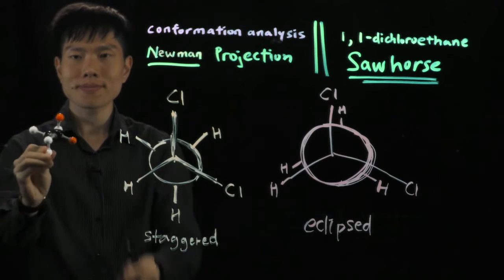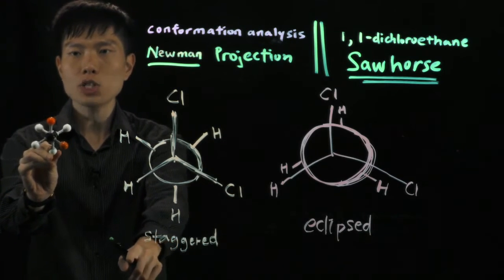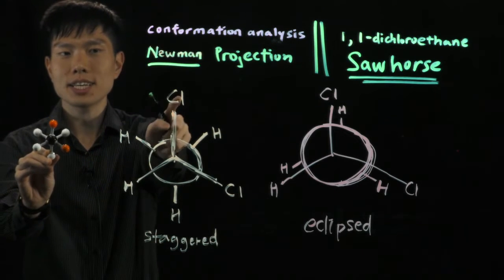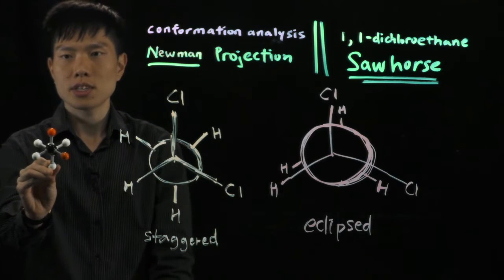So take a look at this molecule. This is the staggered conformer, where the orange colored ball represents the chlorine atom here. See the one at the top and the one by the side.